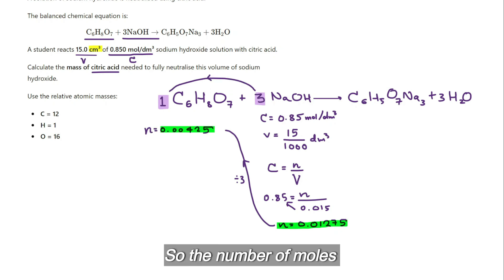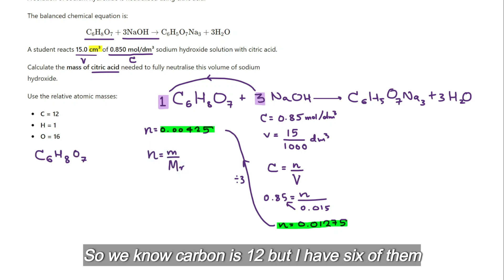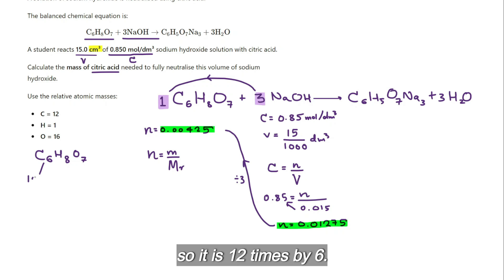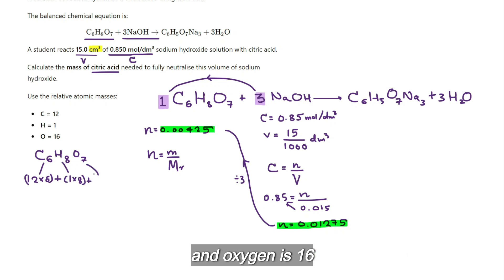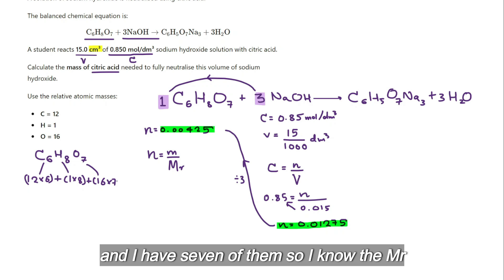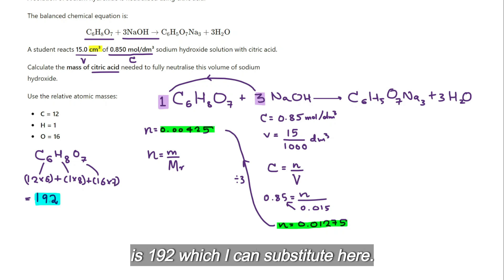Now we need to find the mass of C₆H₈O₇. So we know carbon is 12, but I have 6 of them, so it's 12 times by 6. Hydrogen is 1, but I have 8 of them, so 1 times 8. Add oxygen is 16, and I have 7 of them. So I know the Mr is 192, which I can substitute here.